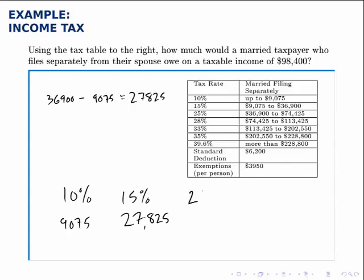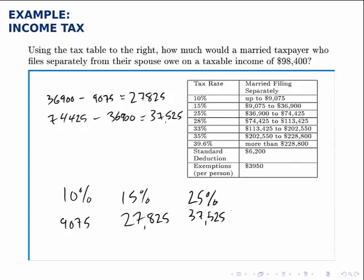We do the same with the next bracket. For the 25% bracket, we subtract 74,425 minus 36,900 to find how many dollars go into that bracket. In this case, that's $37,525, so we put $37,525 into the third bracket.